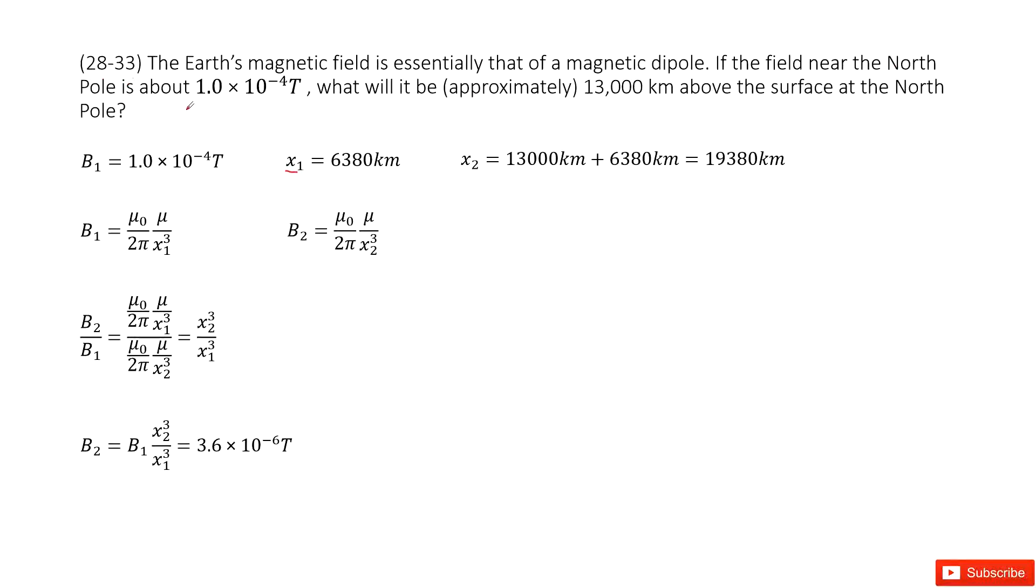So from the north pole to the center of this dipole, we can see the center of the Earth is the radius. So the radius of Earth is 6380 km.